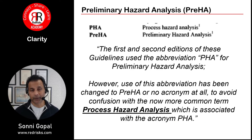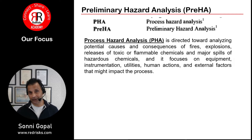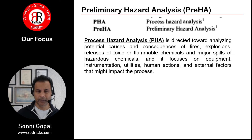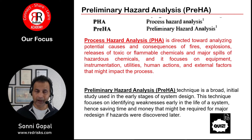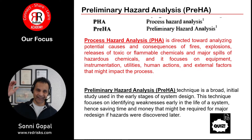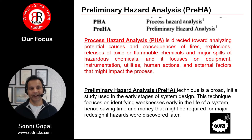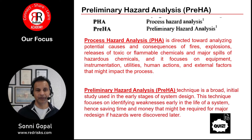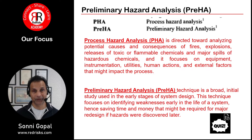In the CCPS guidelines, Process Hazard Analysis is directed towards analyzing potential causes and consequences of fires, explosions, etc. It's very process-driven, very methodical, very structured. The Preliminary Hazard Analysis is a high-level view at the early stages of the system design. It focuses on identifying weaknesses early in the life of a system, hence it saves you the time and effort so you don't have problems later on down the road in terms of trying to fix them.